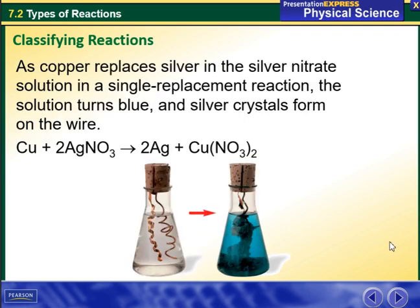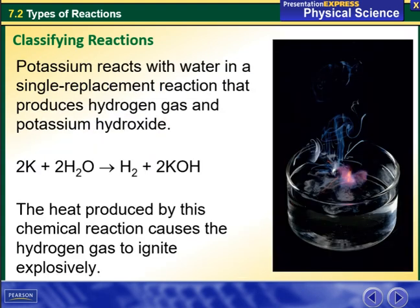Copper displaces silver in a silver nitrate solution in a single replacement reaction — the solution turns blue and silver crystals form on the wire. Potassium reacts with water in a single replacement reaction that produces hydrogen gas and potassium hydroxide. The heat released by this chemical reaction causes the hydrogen gas to ignite explosively.